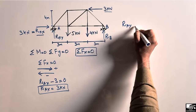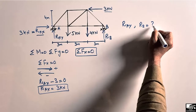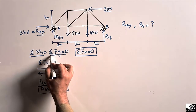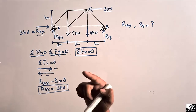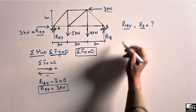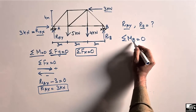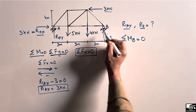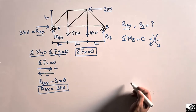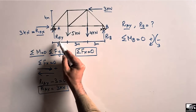Since we have two unknowns, R_AY and R_B, we use the moment equilibrium equation. Taking the summation of moments at point B equal to zero, with clockwise moments taken as positive and anti-clockwise moments taken as negative.